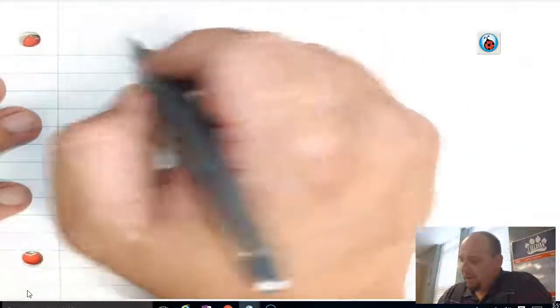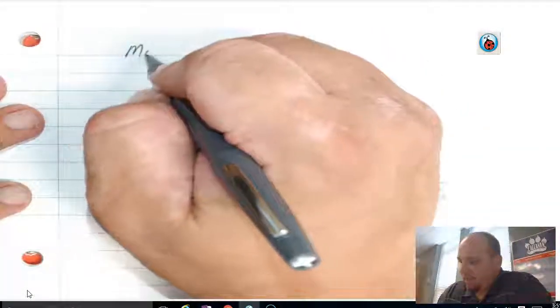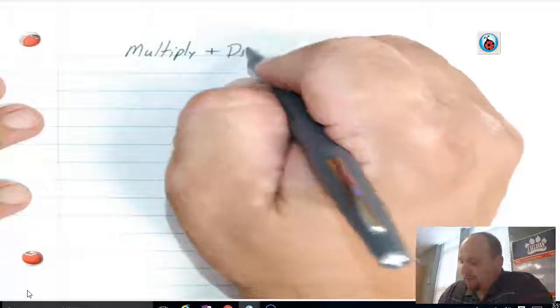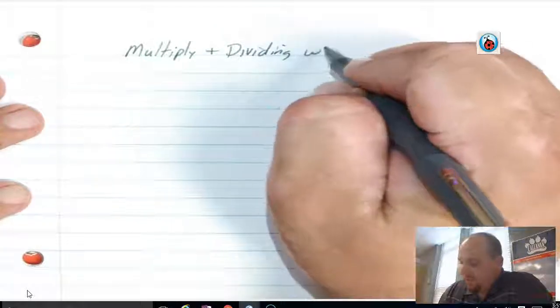All right, now we've been through two or three videos of negative exponents. One last on negative exponents is multiplying and dividing with negatives.